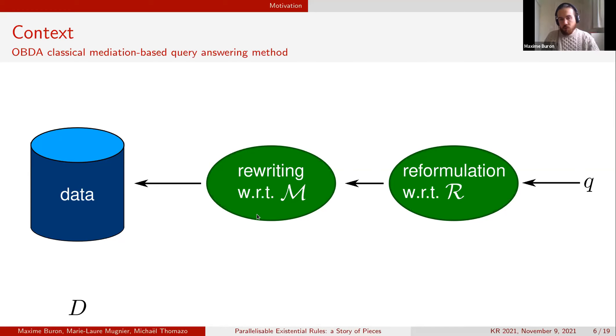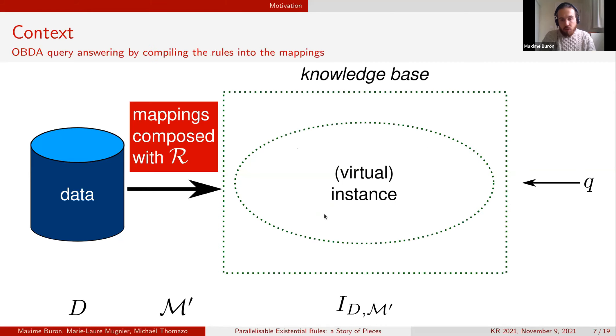The bottleneck of this approach usually is the reformulation. We have many many reformulations and many of them cannot be rewritten using the mappings. Another known approach is to compile the rules into the mappings.